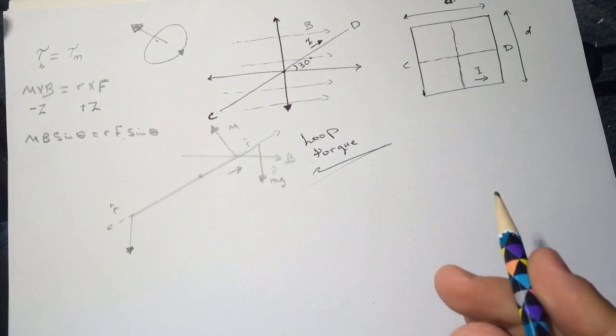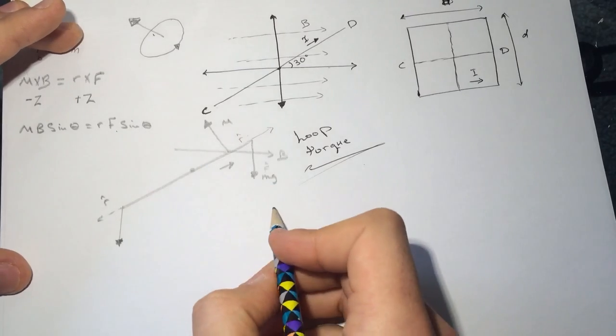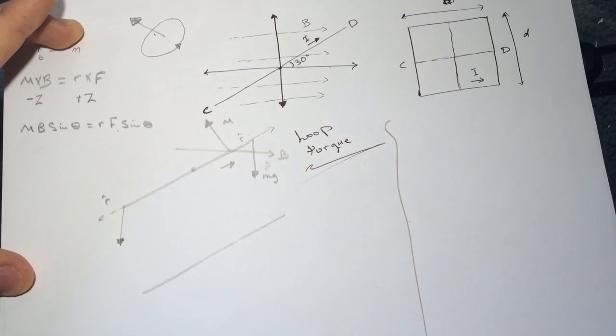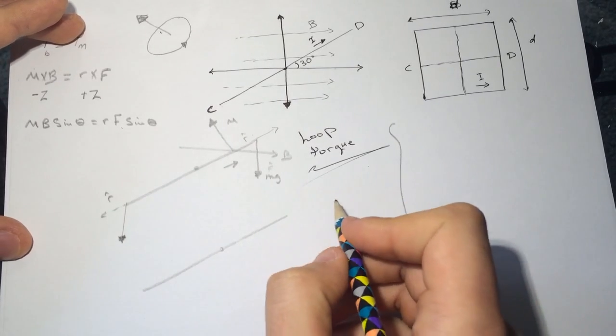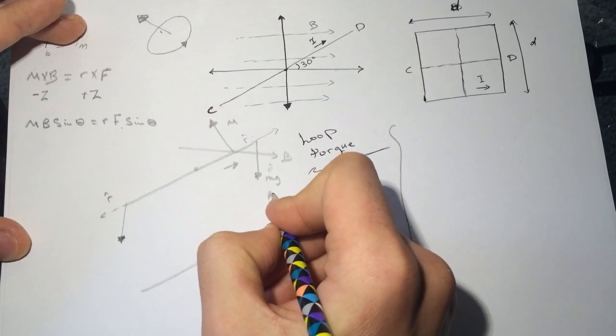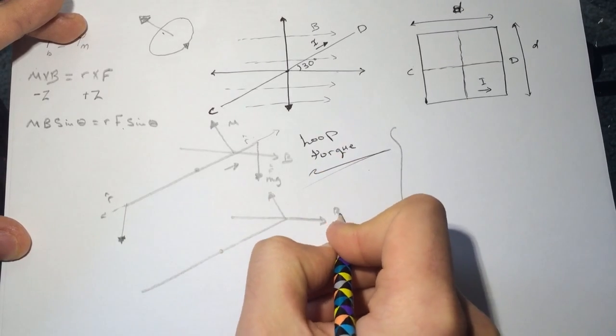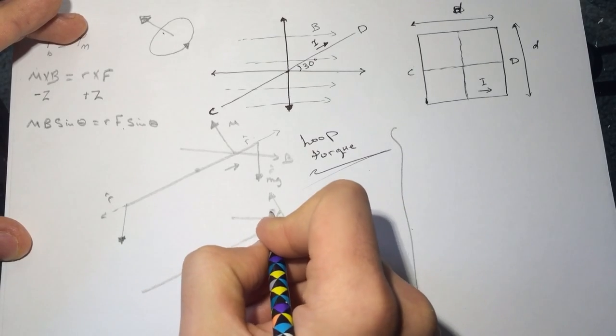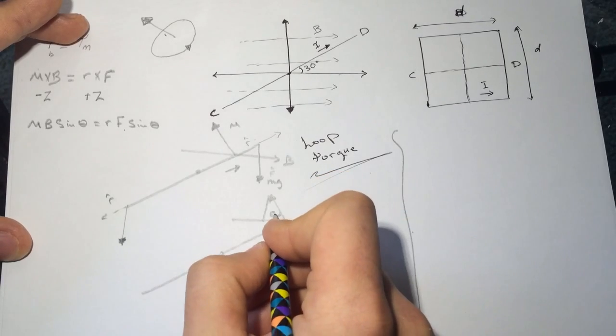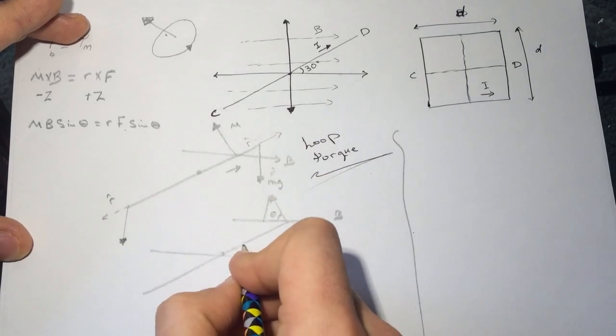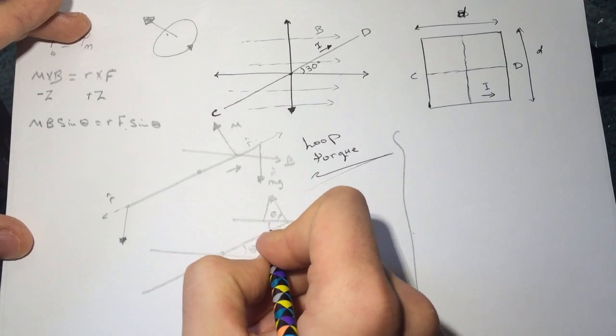Let's examine the angles now. Draw it again here. Here's the dipole moment, here's the magnetic field B. This is the theta we need the sine of. If this theta is here, and this is the same theta, so this theta is 90 minus theta.